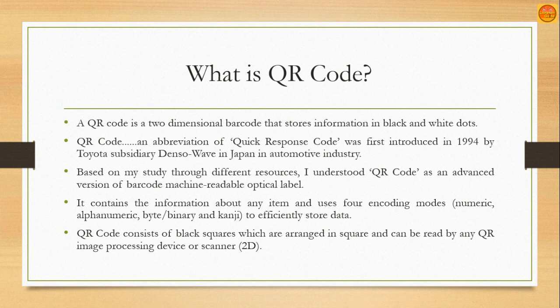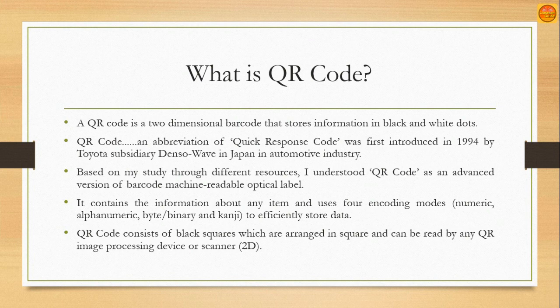The QR code consists of black squares arranged in a square grid and can be read by any QR image processing device or 2D scanner. Any QR code reader or scanner can be downloaded from the internet — it is freely available, especially in the Google Play Store, where you will find plenty of QR code scanners and readers. You can download and install one on any smartphone, scan the QR code, and get the information.